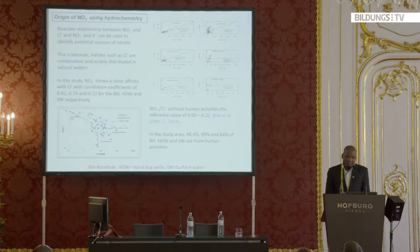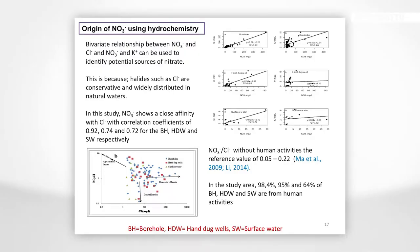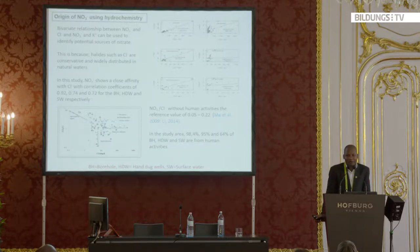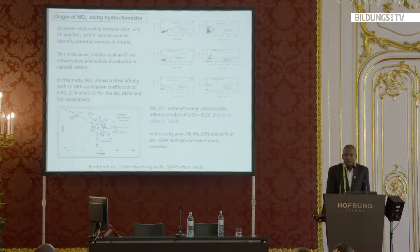Where is the nitrate coming from? For fluoride, studies already tell us it comes from the granite, so I focus on nitrate origin. I first use hydrochemistry with bivariate relationships. For instance, when nitrate moves with conservative ions such as chloride, we can tell about its origin. Where nitrate and chloride share the same origin, plotting one against the other gives a good correlation. I found a very good correlation between nitrate and chloride in both the boreholes, hand-dug wells, and surface water.